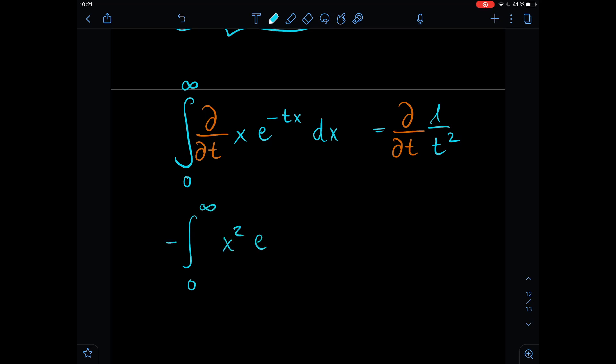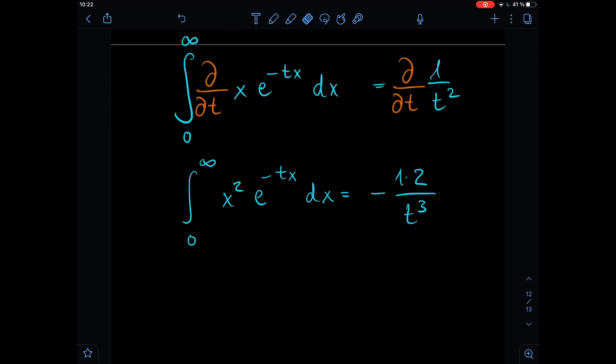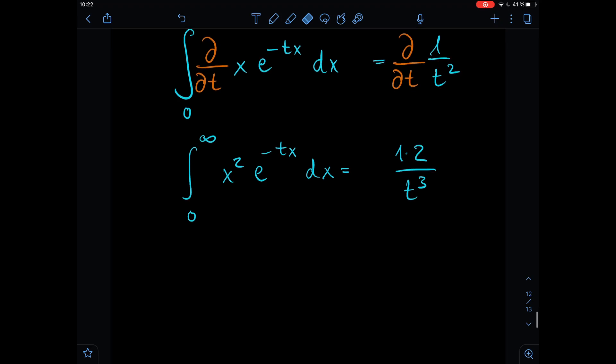So first let's make some space here so we can drag the derivative back into the integral, and now we just take the derivative with respect to x, and this just gives us here the integral from 0 to infinity, x squared minus e to the power of minus tx dx, and this is equal to minus, now we have 1 times 2 divided by t to the power of 3. So the minus signs they drop again, and we're going to keep on doing the whole thing as before repetitively.